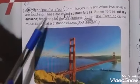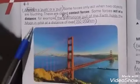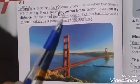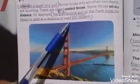Contact force and distance force. Contact forces are present between two objects by touching. Distance forces are present between objects at a distance. For example, the gravitational pull of Earth holds the Moon in an orbit over a distance of 350,000 kilometers.